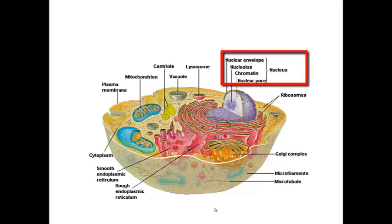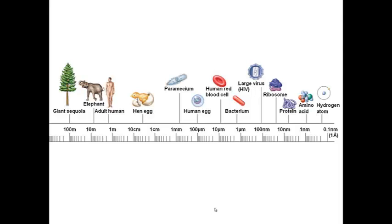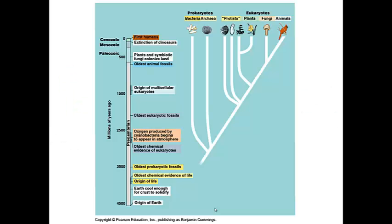And in eukaryotic cells, the nucleus encloses the genetic material of the cell. In terms of size, eukaryotic cells are on the order of one millimeter in size to about ten micrometers. So they are a larger cell than prokaryotes. In terms of evolution, these cells evolved from prokaryotic cells.